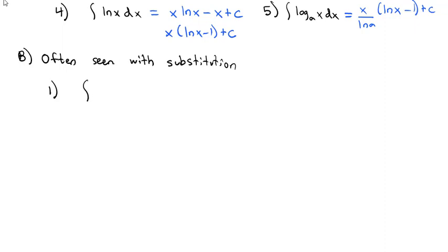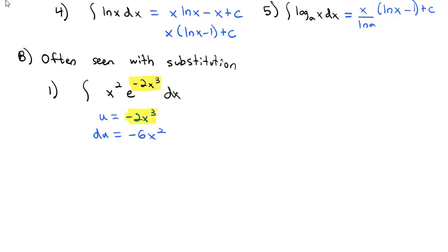The first example: the integral of x² · e^(−2x³) dx. The inside function of −2x³ is an ideal candidate for u, because du, its derivative, is −6x² dx. We have the dx and the x², so we need to introduce a −6 inside and multiply by −1/6 on the outside so that −6 can become part of the integral.